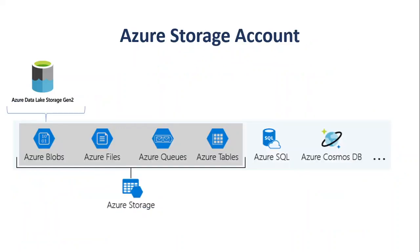As we saw in the last slide, Azure provides many ways to store your data. But Azure selected four core data services — Azure Blob, Azure Files, Azure Queues, and Azure Tables — and placed them together under a service name called Azure Storage.